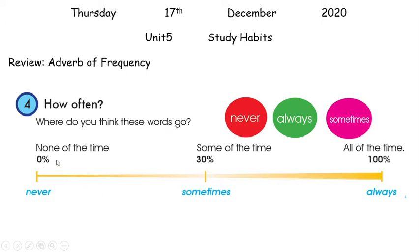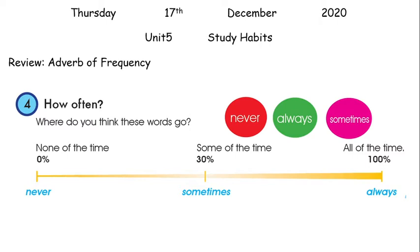Never means none of the time — zero action, no action. Sometimes means some of the time — so some of the time you do this or that. Always means all of the time — you always do something you like. Sometimes you don't do it because you don't like it, and never means you really, really don't like it. These are the three adverbs of frequency.